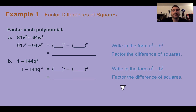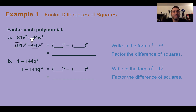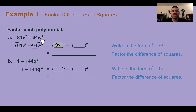Example 1: Factor differences of squares. Factor each polynomial. In a, I have 81v squared minus 64w squared. I can see it's in the format a squared minus b squared, so I'm just going to take the square root to figure out what value was squared. The square root of 81 is 9 and v squared gives v. The square root of 64 is 8 and w squared gives w. So my two factors are 9v and 8w. Writing it as a difference of squares — one positive, one negative — gives 9v plus 8w and 9v minus 8w.